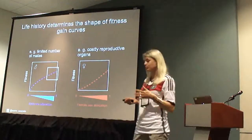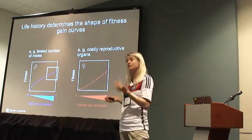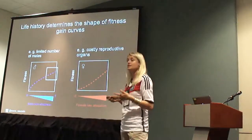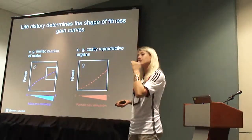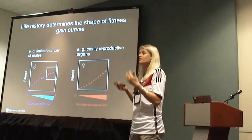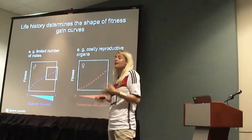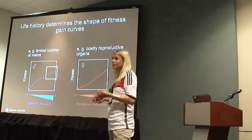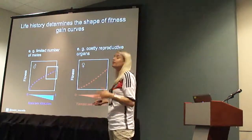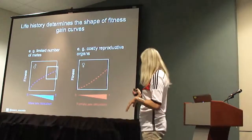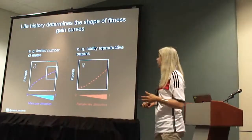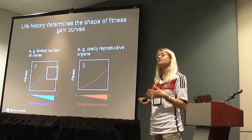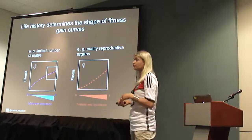Life history has been proposed to play a big role in how these fitness gain curves are shaped. Especially for male fitness gain curves, we think that a limited number of mates leads to a saturating relationship — when there are few mates around, making a lot of sperm or pollen doesn't necessarily increase fitness much, because you already fertilized everything you could with a little bit. On the other hand, accelerating fitness gain curves are proposed when reproductive organs are costly and there's some kind of start-up cost to reproducing with that sexual function.